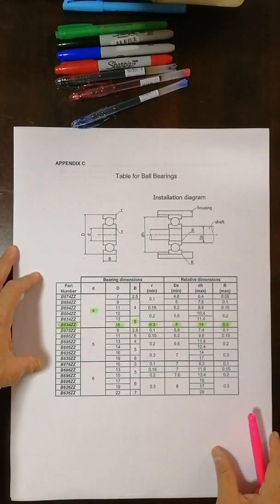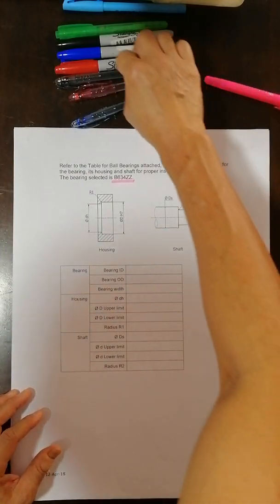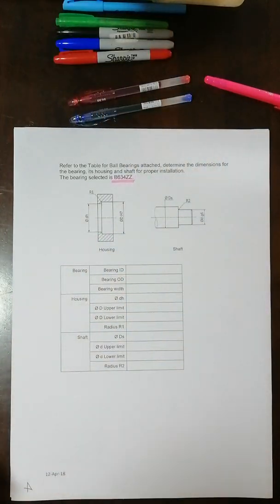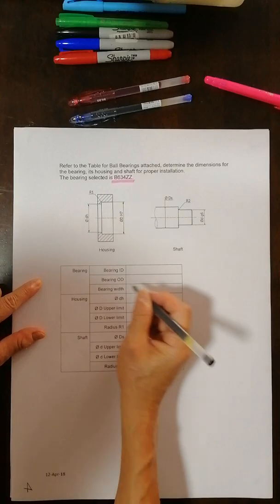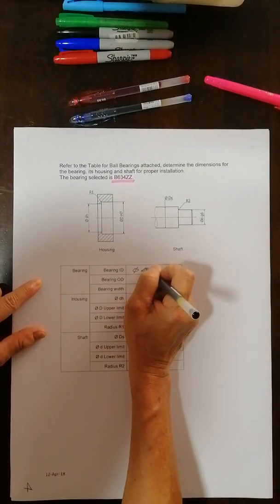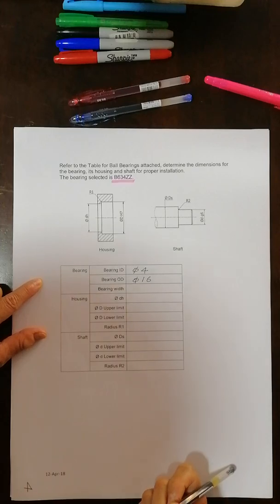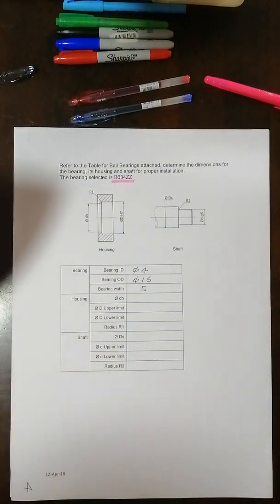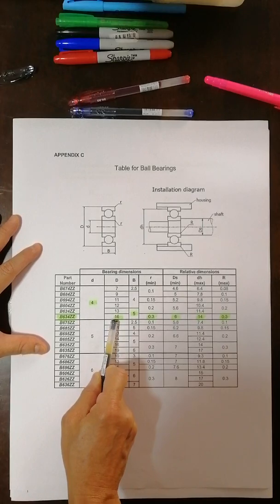Let's put the numbers onto the table. I'll move this aside. Now, it's mentioned the bearing ID. Bearing ID means bearing E, ID means the inner diameter. Inner diameter, we have diameter 4. For the bearing outer diameter, we have diameter 16. And the bearing width is 5.